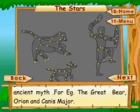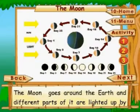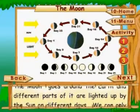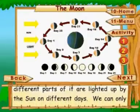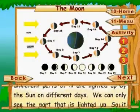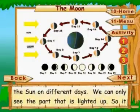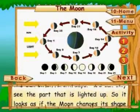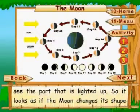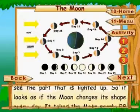The moon goes around the earth and different parts of it are lighted up by the Sun on different days. We can only see the part that is lighted up, so it looks as if the moon changes its shape every day.